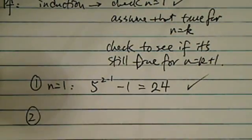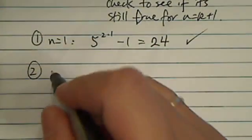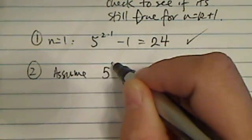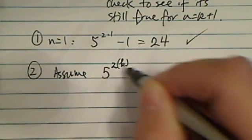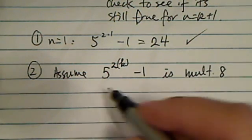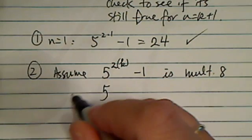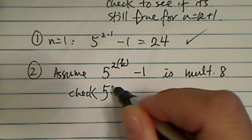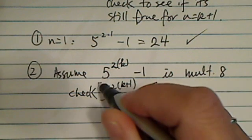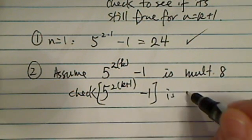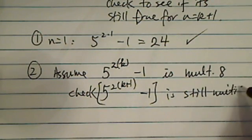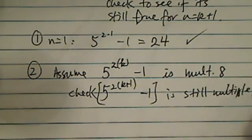Number 2, this is the fun part. You're going to assume that 5 to the 2k minus 1 is a multiple of 8. Then we're going to check 5 to the 2 times k plus 1 minus 1, to see if this one is still a multiple of 8.